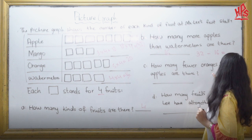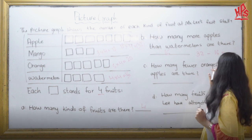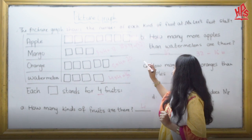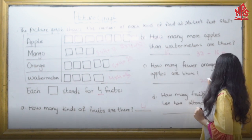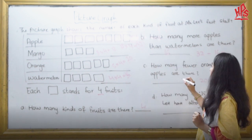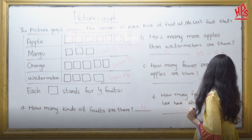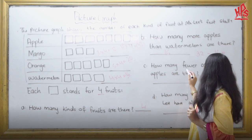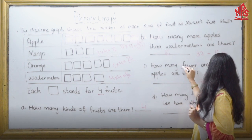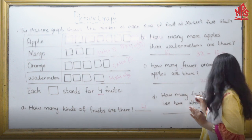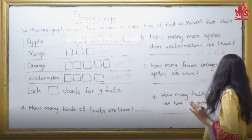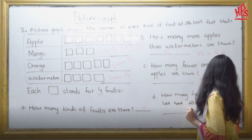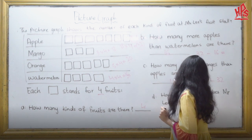Now part C: How many fewer oranges than apples are there? How many oranges do we have? 20. And how many apples? 32. If the question uses the word 'fewer,' it means you have to do subtraction again. So 32 minus 20 is 12. There are 12 fewer oranges than apples.